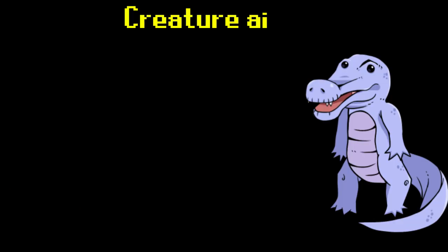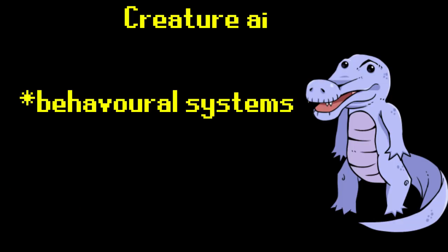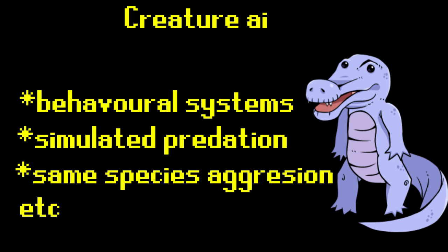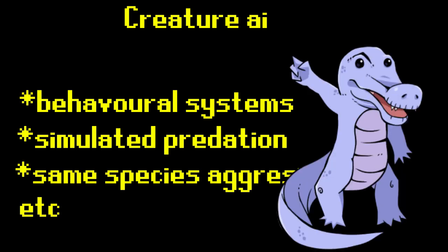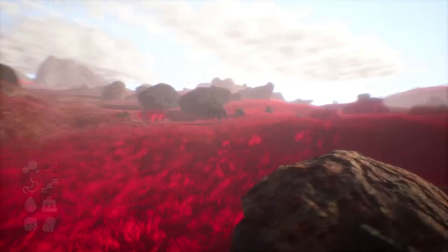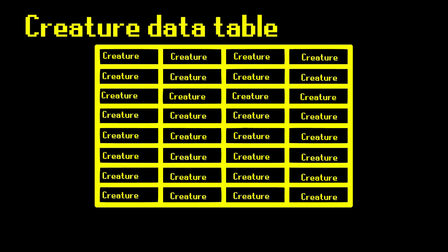We'll be starting off with the creatures, specifically how they act within the game. It will be hard to give a plain explanation of how these creatures function, but for the purposes of this video, I will simplify it to an extent. To start off, all entities have an enumeration variable — basically a large table of data — containing names for different entities to be detected.